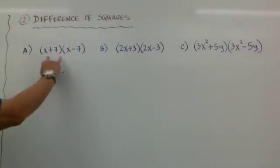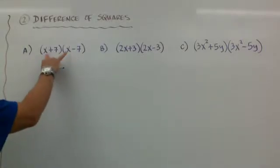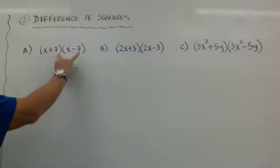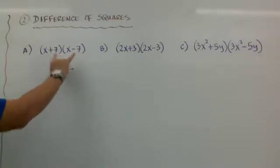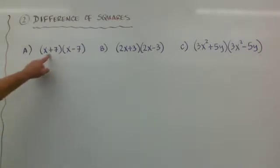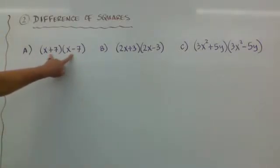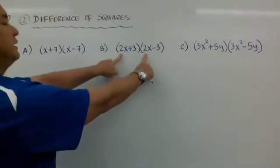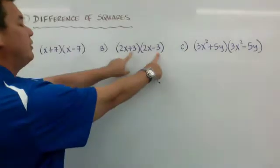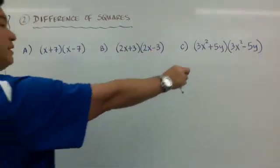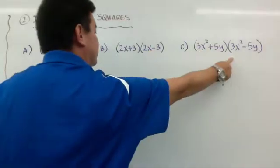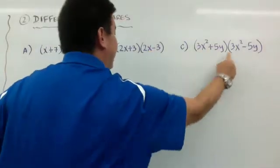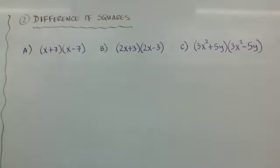When you have a binomial, if you notice: it's x and x, plus and minus, 7 and 7. If those are exactly the same except for the plus and the minus, that's going to be called difference of squares. Same thing here: you've got 2x and 2x, 3 and 3, but a plus and minus. Same thing here: you've got 3x squared, 5y, and a plus and minus.